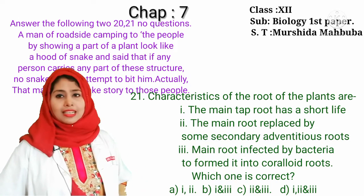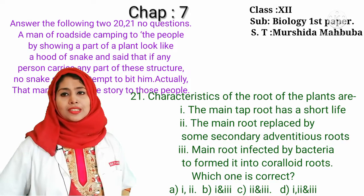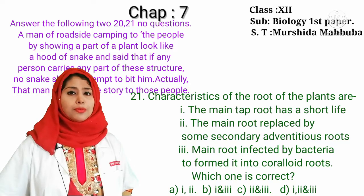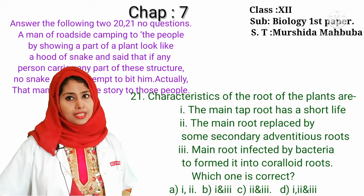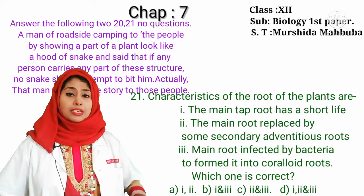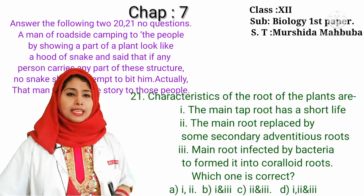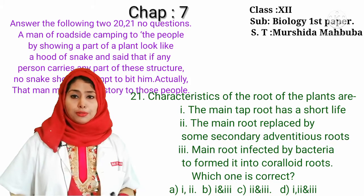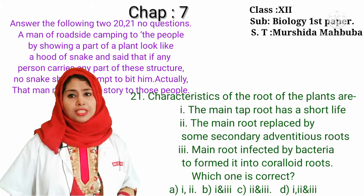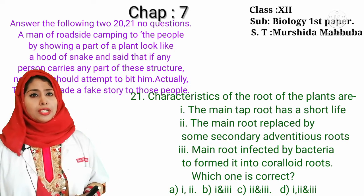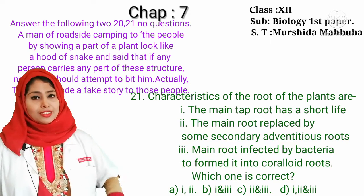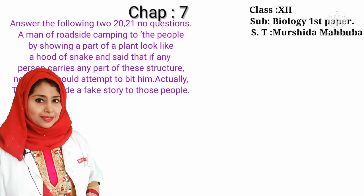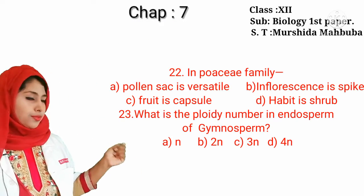We know this is the Cycas plant, so the root characteristics are: the main taproot has a short life — correct; the main root is replaced by secondary and adventitious roots — also correct; the main root is infected by bacteria to form coralloid roots — also correct. So the correct answer is 1, 2, and 3, option D.